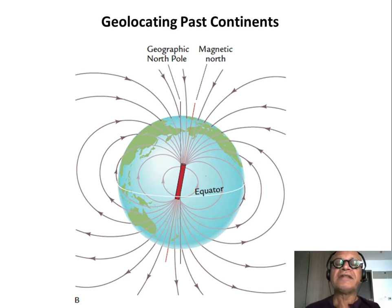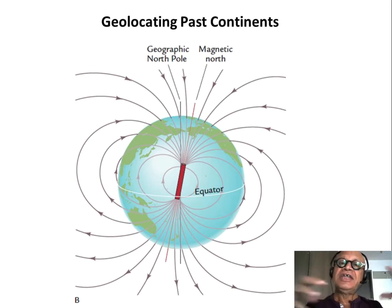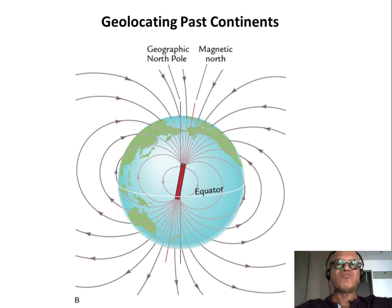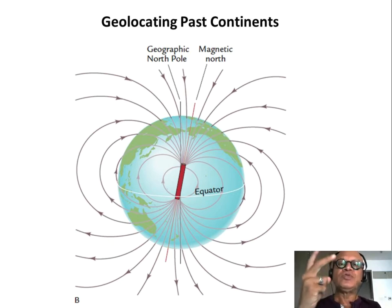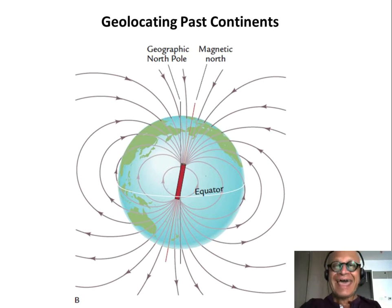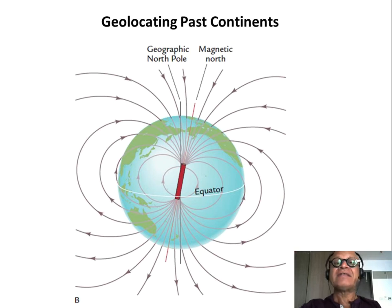Let's quickly understand how we geolocate the continents. We said India moved and Pangaea broke up and continents moved around. So we need two things: when they were at the location that we are claiming they were at — how many million years ago — and the latitude or longitude where they were found.